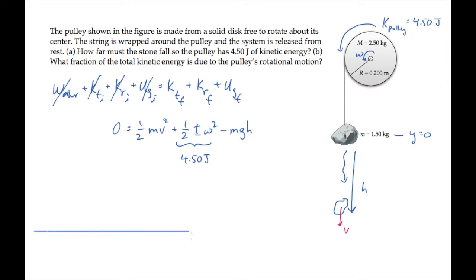So let's come down here and use the rotational kinetic energy to find omega, which we can use to find how fast the stone is falling at that same point. The moment of inertia for a solid disk is one half M R squared.